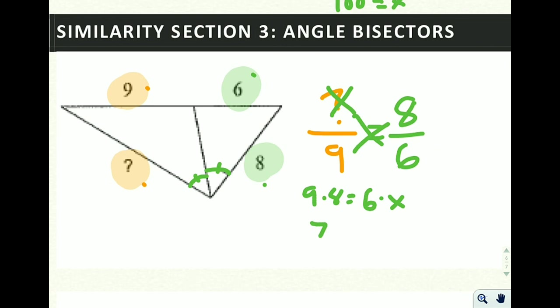9 times 8 is 72 and then we have 6x. Divide both sides by 6, and 72 divided by 6 is going to be 12. So x is equal to 12, so that makes this here 12.